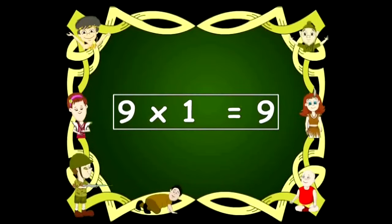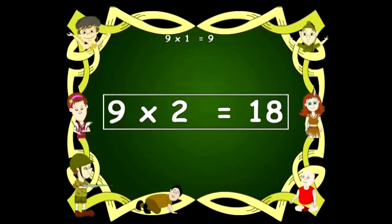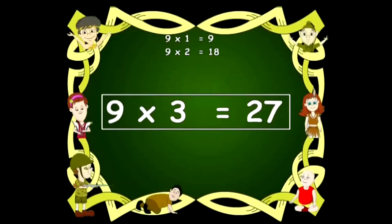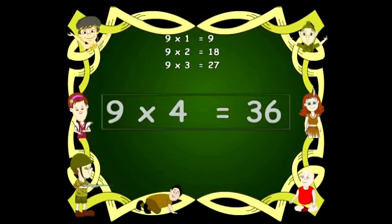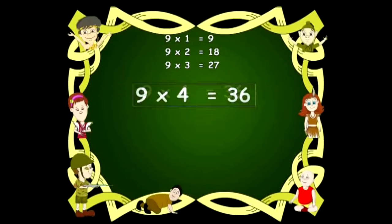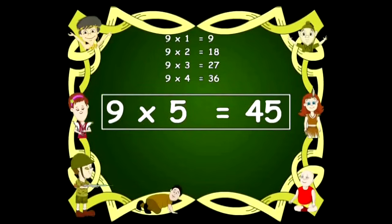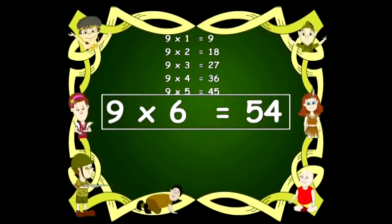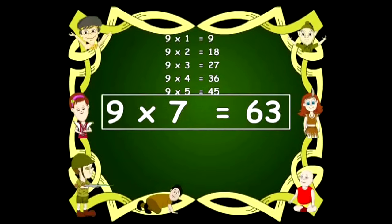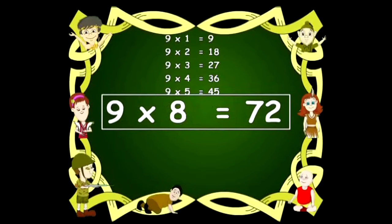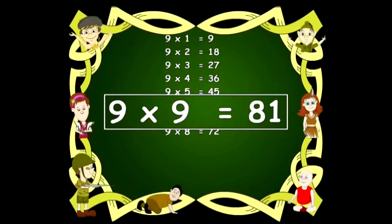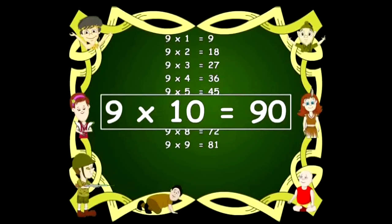Nine ones are nine. Nine twos are eighteen. Nine threes are twenty-seven. Nine fours are thirty-six. Nine fives are forty-five. Nine sixes are fifty-four. Nine sevens are sixty-three. Nine eights are seventy-two. Nine nines are eighty-one. Nine tens are ninety.